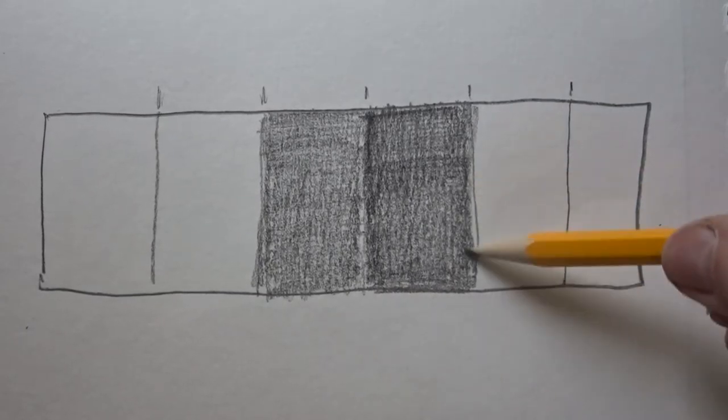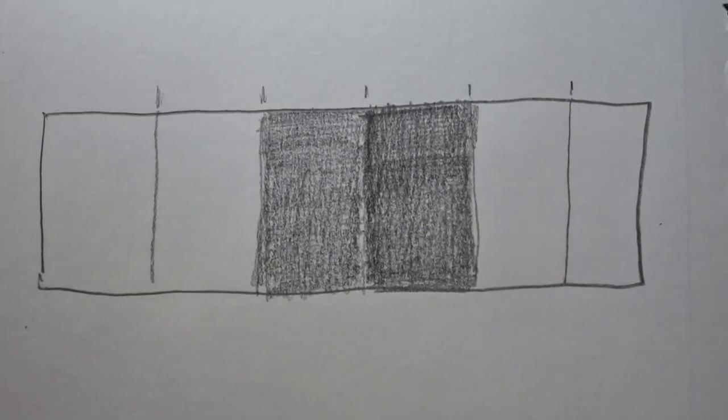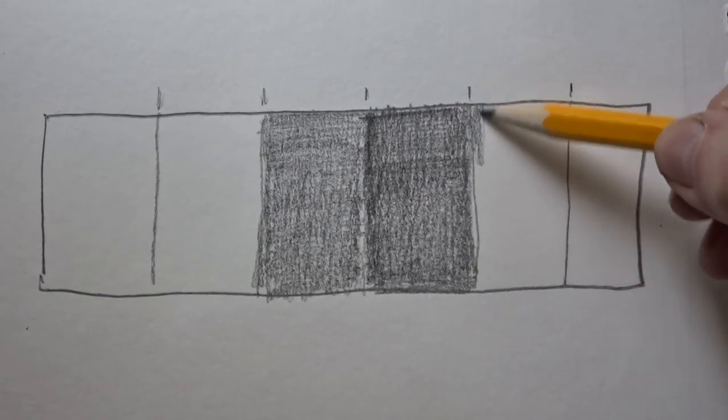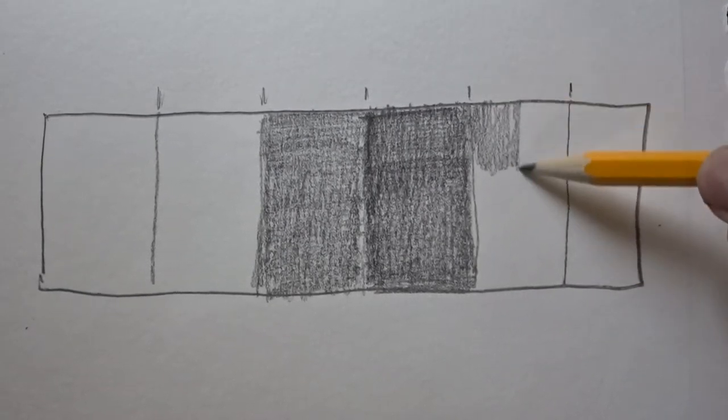I want to make sure that I'm trying to keep the value even inside each of my sections. Tidy it up a little bit, and then go to the next one. You can see that my first one is clearly lighter than the second one.